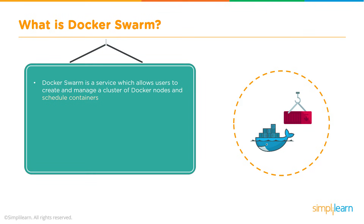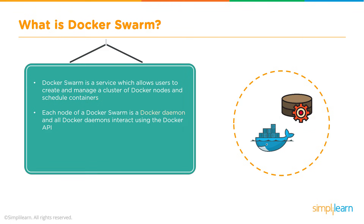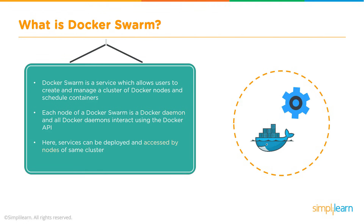A Docker Swarm is essentially a tool that allows you to easily create and schedule multiple Docker nodes — really two or more — and you can have quite a large number in a single Swarm. Each node is a Docker daemon able to interact with the Docker API and have all the benefits of a full Docker environment. Each Docker container within the Swarm can be deployed and managed as a node in that clustered environment.